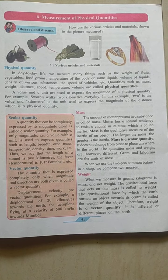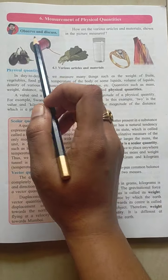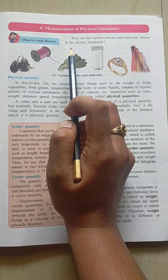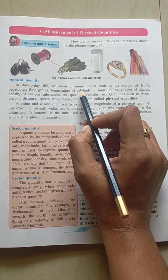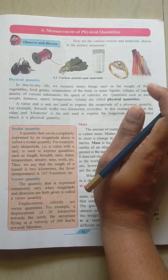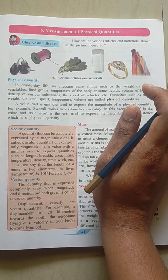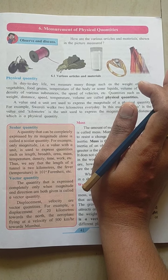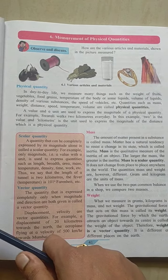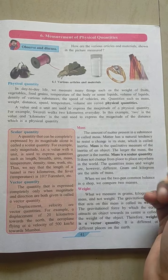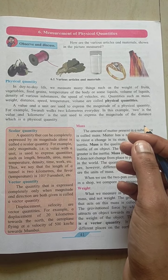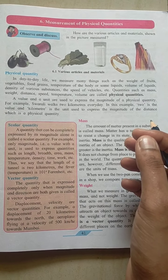Hello students, today we are going to learn a new chapter in science — measurement of physical quantities. In this chapter we will study how we measure various things in our day to day life. As you all know, when we go to market or purchase things, the shopkeeper weighs the material or article purchased, and that is the unit given to the weight of that particular object. Similarly, there are various other things which are measured using various units. Let's start and study how various articles and materials are measured.